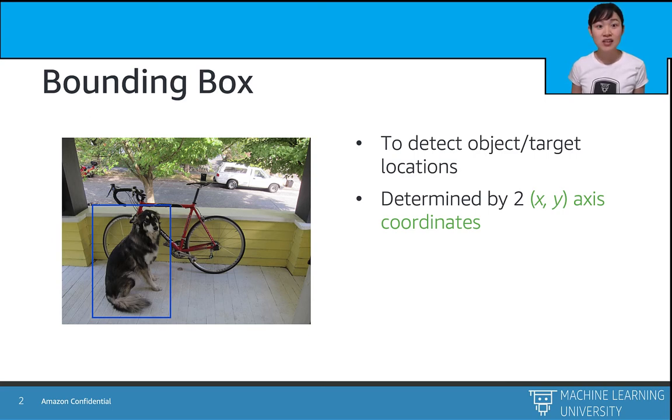A bounding box contains two pairs of axis coordinates, one for the upper left corner's coordinates and the other for the lower right corner coordinates.